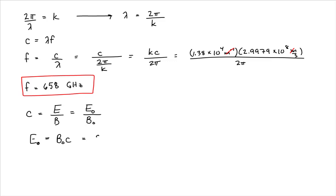We were told that the amplitude of the magnetic field is 8.25 nanotesla. The speed of light is 2.9979 times 10 to the 8th meters per second. You should recognize that a Tesla meter per second is the same set of units as a volt per meter.